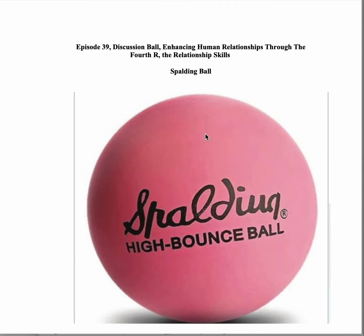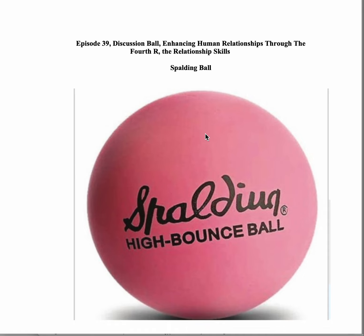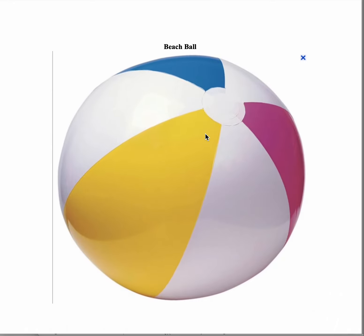Let's go over the four steps in implementing discussion ball. In step number one, the group leader invites all members of the group to form a circle. Members can stand or they can be seated — that's the determination the group leader would make. In step two, the group leader says that this is a very, very special ball — a magical ball that we are going to use today. It's called the discussion ball.